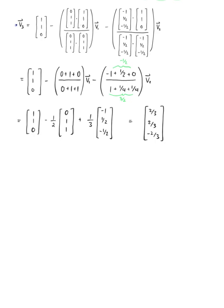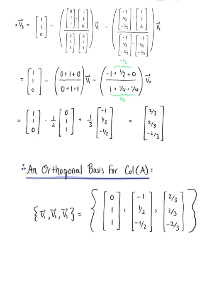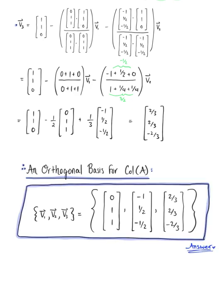We are now ready to state our final conclusion. By the Gram-Schmidt process, an orthogonal basis for the column space of matrix A is the set of vectors {(0, 1, 1), (negative 1, one half, negative one half), (2/3, 2/3, negative 2/3)}. Keep this example in mind, because we will come back to it and use it with the QR factorization.